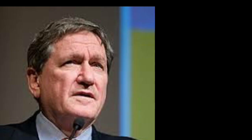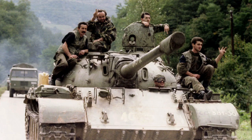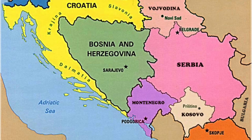Richard Holbrooke, the senior American diplomat, played a key role in these talks. In later years, after much strife and indeed civil war, Kosovo also emerged from Serbia as an independent nation in 2004 under United Nations supervision.